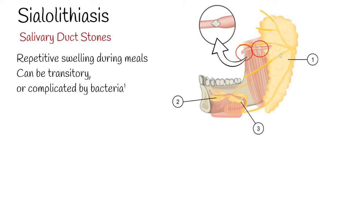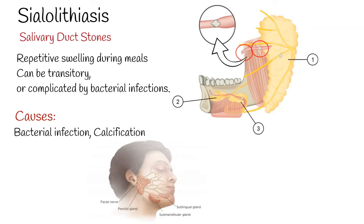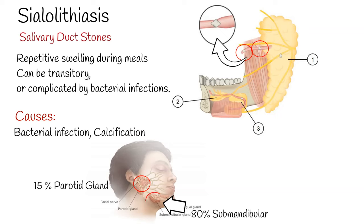Salivary duct stones are composed of varying ratios of organic and inorganic substances. The cause of the condition is thought to begin with bacterial infection and growth, followed by further calcification and addition of organic and inorganic components. Sialoliths, or salivary stones, are the most common disease of the salivary glands in middle-aged patients. More than 80% occur in the submandibular duct or gland, 6% to 15% in the parotid gland, and about 2% in the sublingual and minor salivary glands.